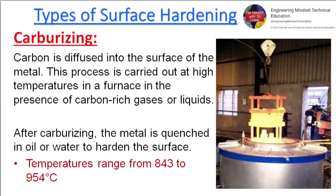Carburizing. Carbon is diffused into the surface of the metal. This process is carried out at high temperatures in a furnace in the presence of carbon-rich gases or liquids. After carburizing, the metal is quenched in oil or water to harden the surface. Temperatures range from 843 to 954 degrees Celsius.